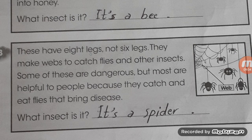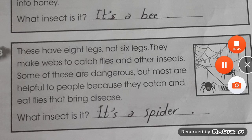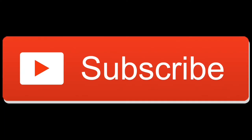Number three: These have eight legs, not six. They make webs to catch flies and other insects. Some of these are dangerous, but most are helpful to people because they catch and eat flies that bring disease. What insect is it? It's a spider - العنكبوت.